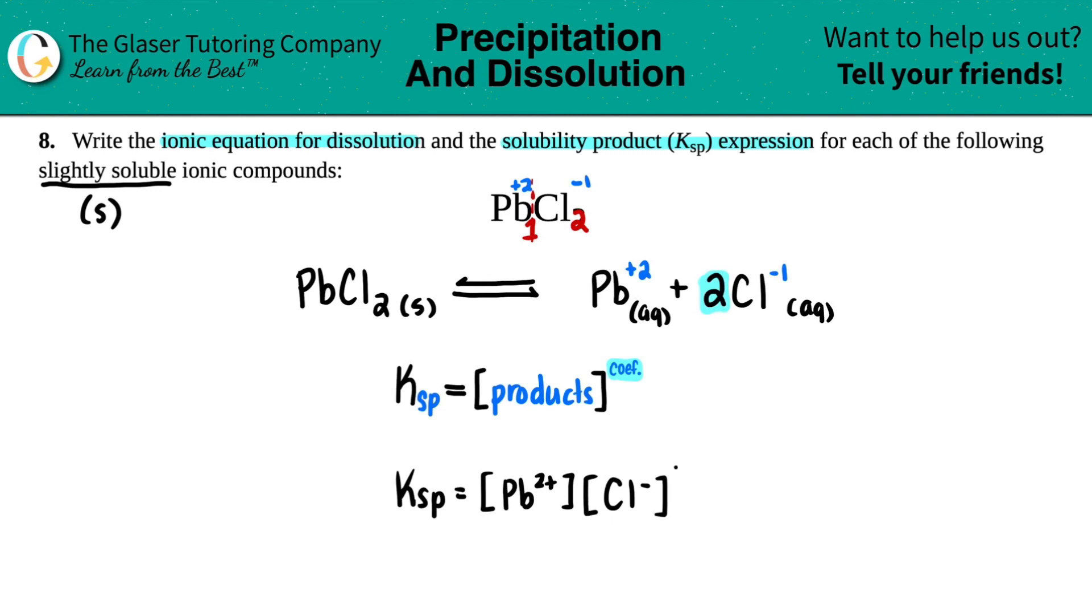the chlorine to the second power. But since I only had one lead, I don't have to – it is raised to the first, but anything raised to the first is the same thing. So this would be your Ksp solubility product expression, and then this would be the balanced equation. And that's it. Hopefully this helped. Thank you so much for watching the video. Let me know in the comments, subscribe to the channel, and let's keep doing more problems together. I'll see you in a little bit. Bye-bye!